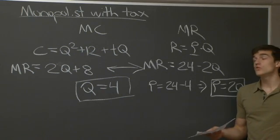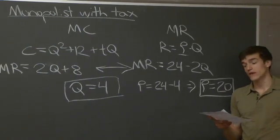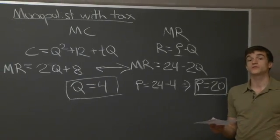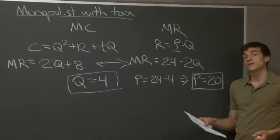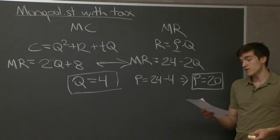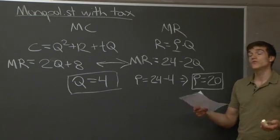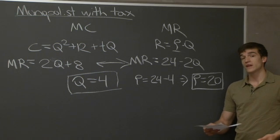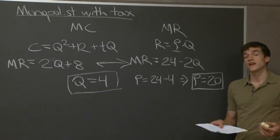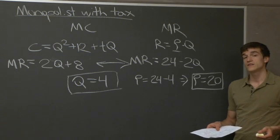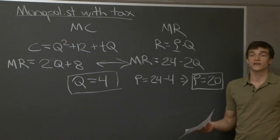In this problem you could calculate the consumer surplus, producer surplus, deadweight loss, and tax revenue quantitatively. But we're going to draw a new graph and make a qualitative assessment of how those quantities have changed.